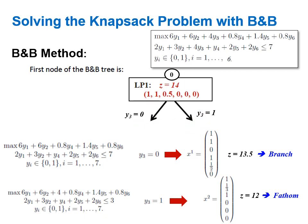I select the branch with y3 equal to zero. Setting y3=0 causes all terms involving y3 to disappear from the objective function and constraint, giving a reduced formulation with no y3. I solve this using the same greedy algorithm: the ratios are six over two for y1, six over three for y2, and 0.8 over one for y4, etc. Starting from the highest ratio, I set y1=1 (weight two satisfies capacity seven), then y2=1 (total weight five satisfies seven), then consider y4.